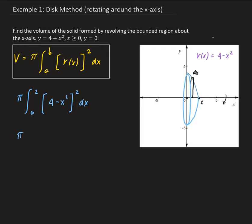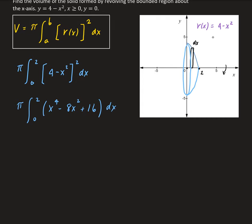So now we're going to expand this. 4 minus x squared to the power 2, that's going to give us x to the 4 minus 8x squared plus 16. So we're going to take the integral of this.